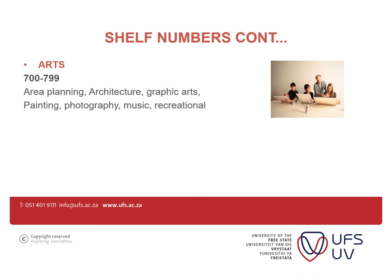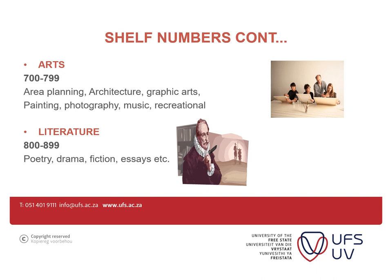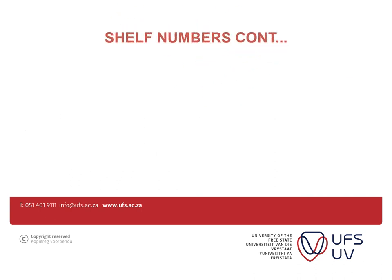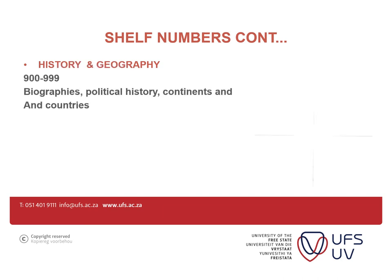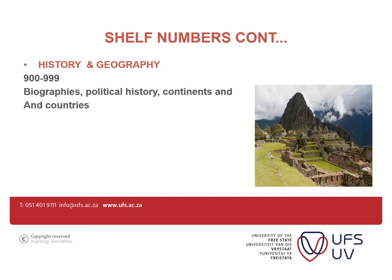Moving on to 800 to 899, which is literature. Under literature we have poetry, drama, fiction, et cetera. For those doing Afrikaans, you'll find your books at 839, and those doing Zulu or Siswati will find their books at 896. Moving on to 900 to 999, which is history and geography. Geography books are found at 910 to 919, and history is 930 to 999.